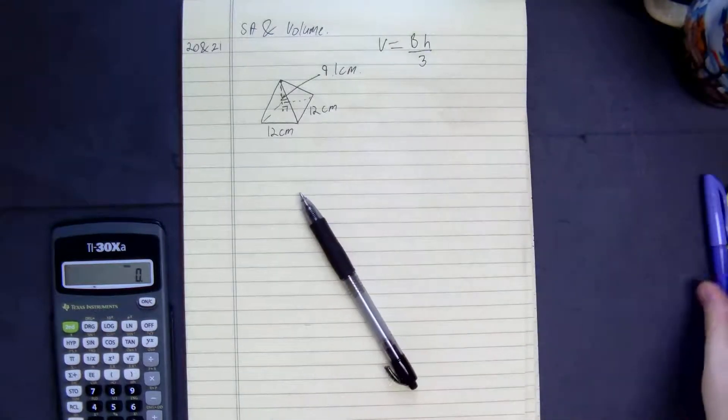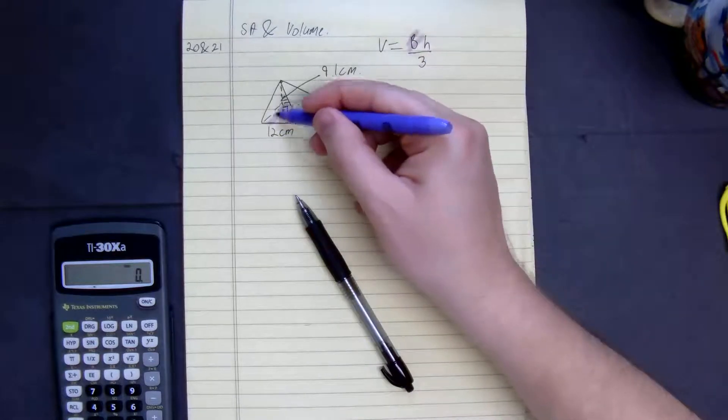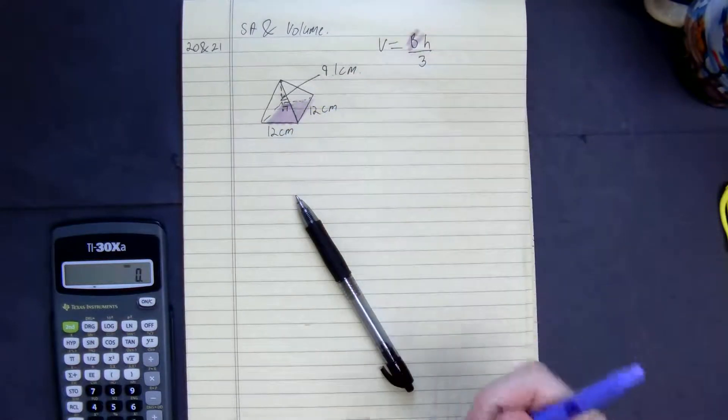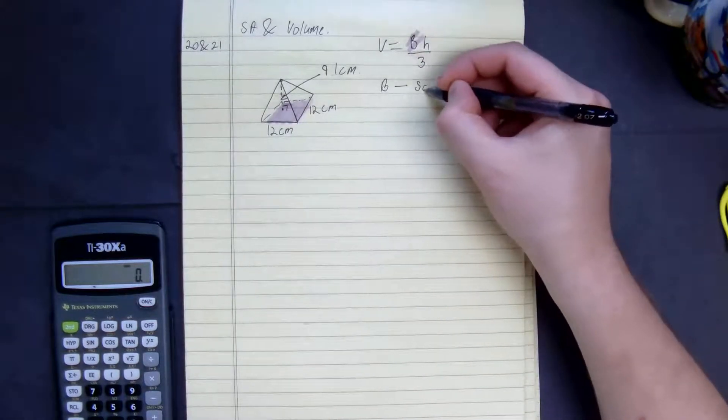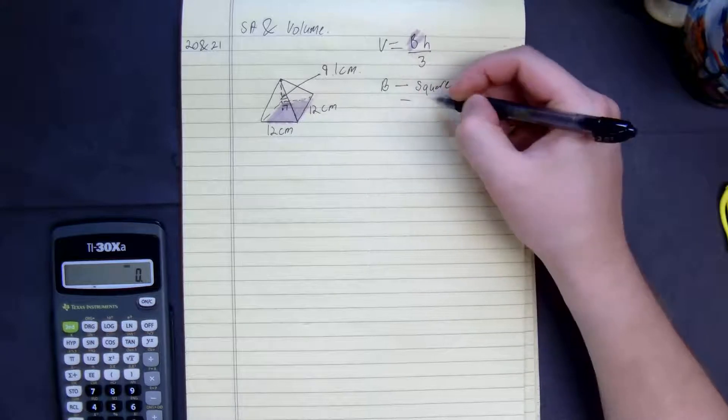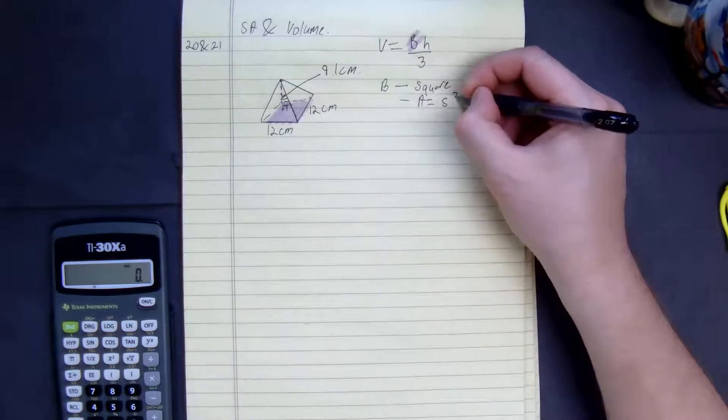So right here we need to figure out what our base is. Our base, or singular base, because the pyramid has one base, is going to be a square it looks like. So base is a square.